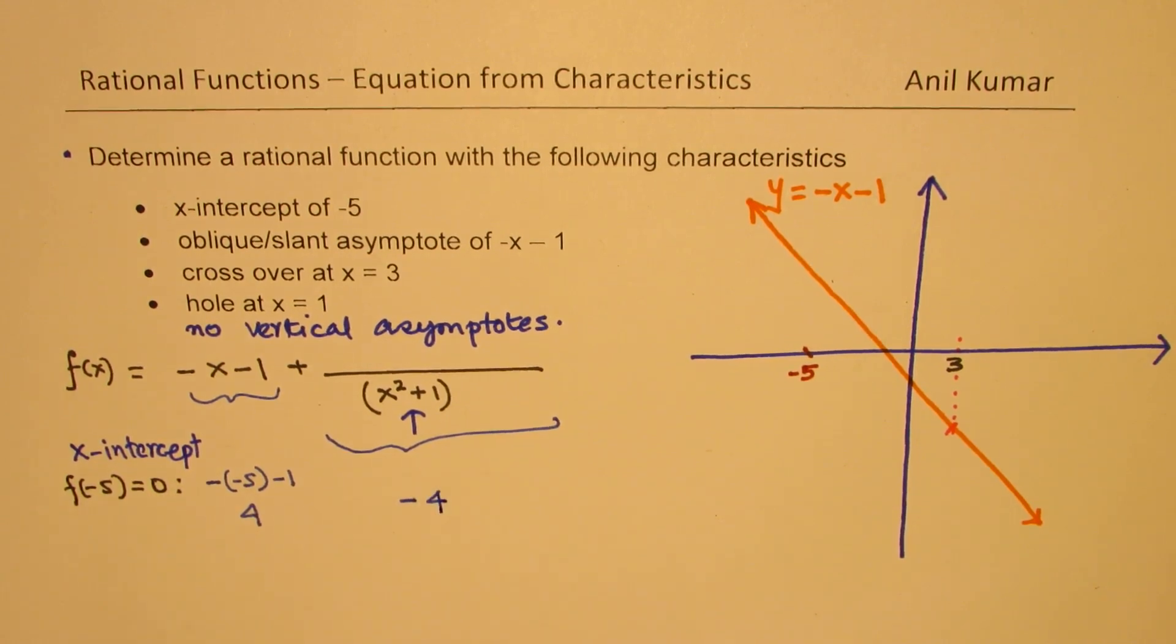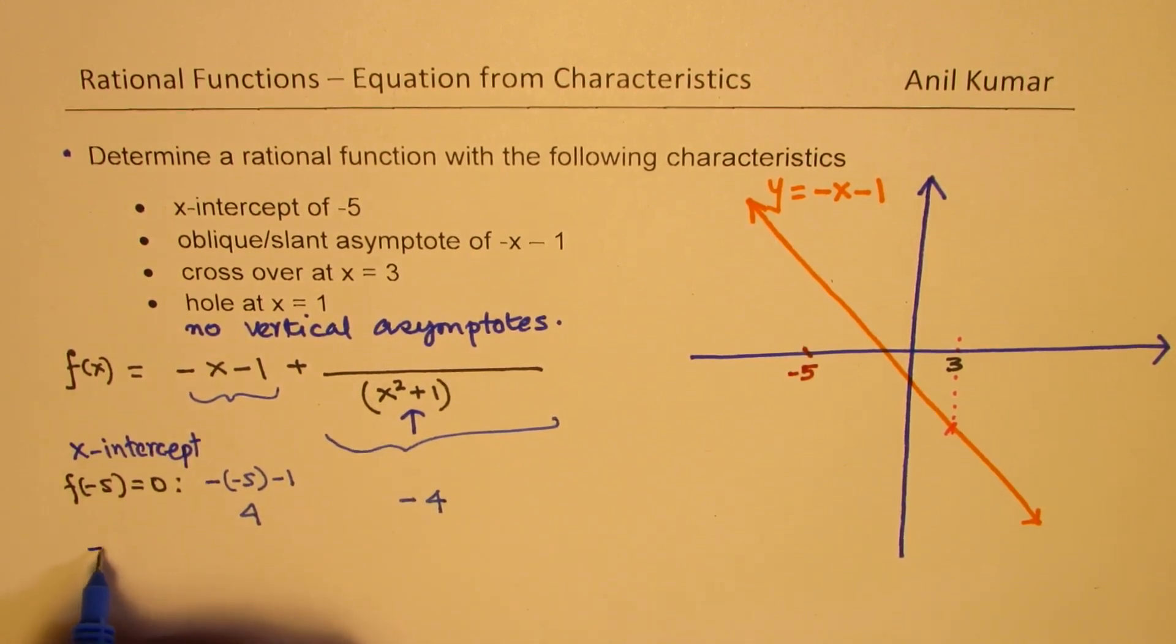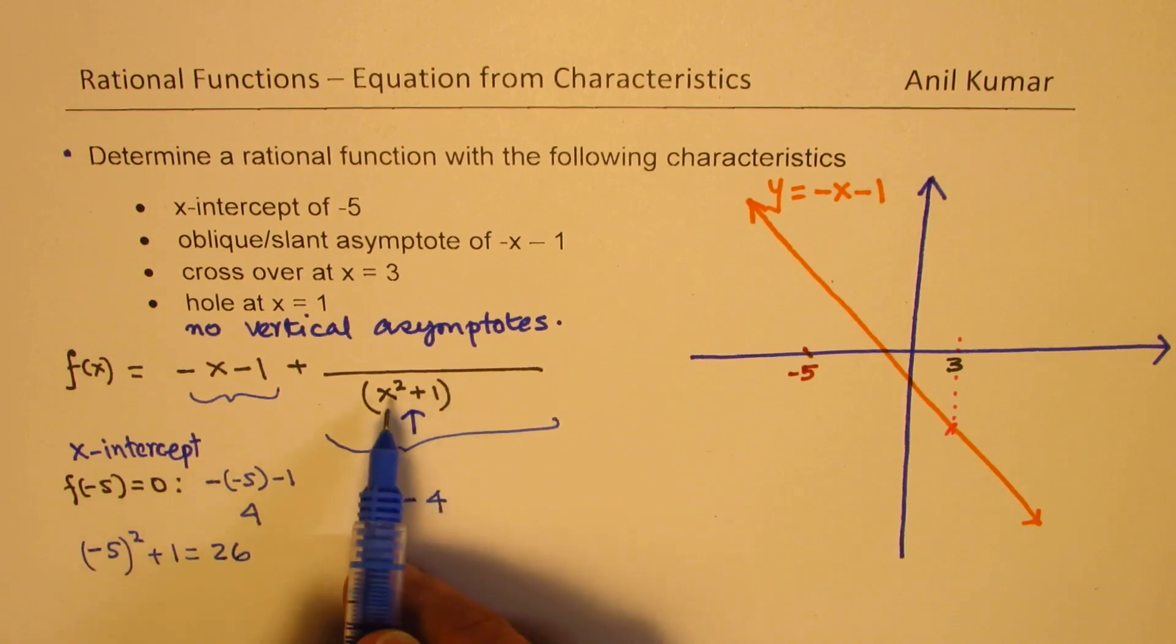Is that clear to you? This whole value should be minus 4. Now, substituting minus 5 for x squared plus 1 gives us 26. So to get 4, what can I do here?